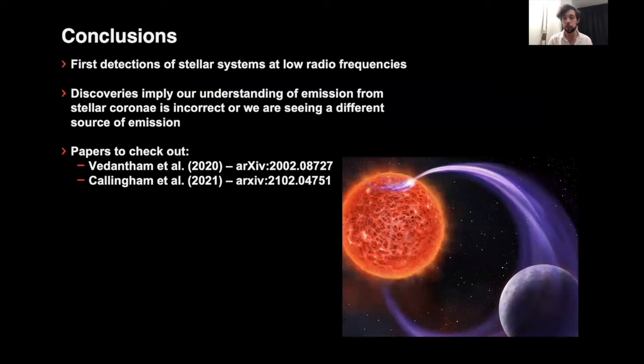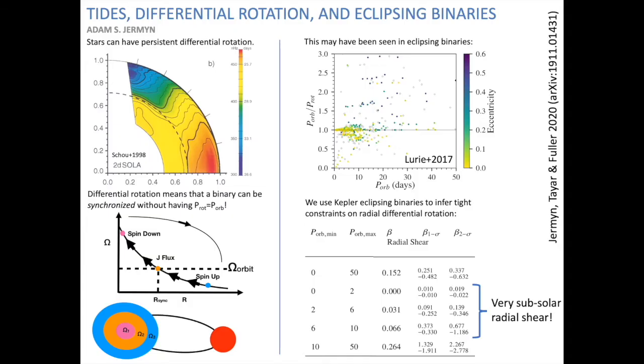Hi, I'm Adam Germain and I want to tell you about tides, differential rotation, and eclipsing binaries. We know from helioseismic observations that stars can have persistent large-scale differential rotation. This differential rotation means that when a binary tidally synchronizes, it isn't the surface that synchronizes to the orbital period but somewhere deeper in the star, and so the surface period may not equal the orbital period.